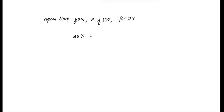then what is the percentage change in the closed loop gain? The open loop gain is equal to 500, and the feedback gain beta is equal to 0.1.